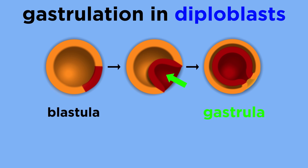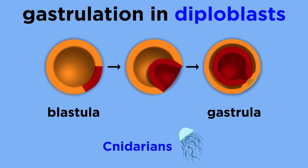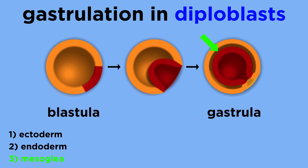First, the blastopore folds inward and forms a gastrula. Now two cell layers are present. In diploblastic animals, like the cnidarians, these two are their only unique germ layers: the ectoderm and the endoderm. These layers are separated by a primarily non-cellular, water-filled tissue layer called the mesoglea, which we will discuss in more detail later in the series.